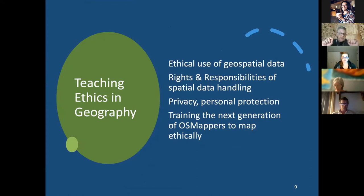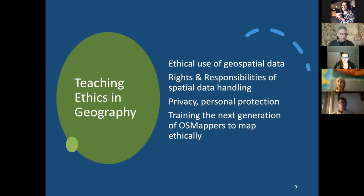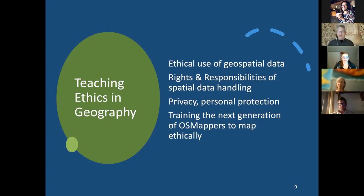We also have a huge opportunity to teach the ethical use of geospatial information. Randy Hale tells a story about when he first introduced OpenStreetMap into a classroom of ninth graders — a lot of students quickly found their friends' houses and tagged them as brothels. While that's a benign example, it really shows the rights and responsibilities that go hand in hand with open mapping, and it's a teachable moment around privacy and protecting people from being doxed using OpenStreetMap. Training the next generation of mappers to map ethically is key — we have a lot of data to maintain.